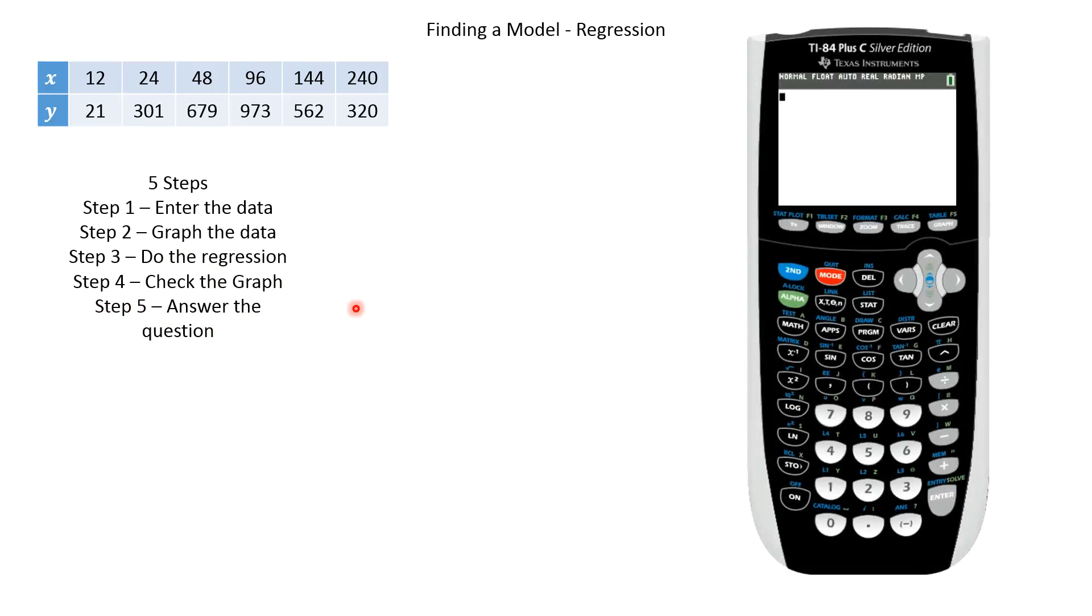So let's pull out our calculator and see what we're going to do. So the first thing we need to do is we need to enter the data. So we're still going to go to stat, edit. And oh, look, I have my data from last time in here. So we can go up and clear it. Don't delete. Clear. Go back down. Hey, look, I cleared the list. Go over, do the same thing. Up, clear, back down. And now I'm ready to enter the data.